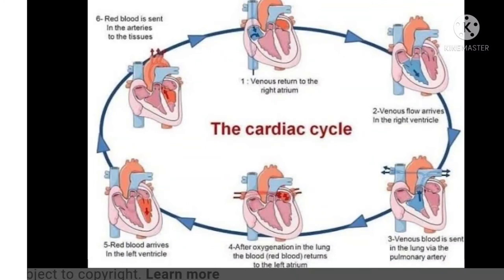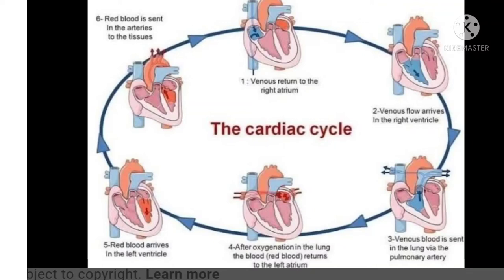Today the first topic is the cardiac cycle. One contraction and one relaxation of the atria and ventricles is called one cardiac cycle. In the first step, deoxygenated blood from the vena cava and oxygenated blood from the pulmonary veins enter the right and left atria respectively. Then both atria contract, forcing blood into the ventricles. The ventricles are filled with blood.